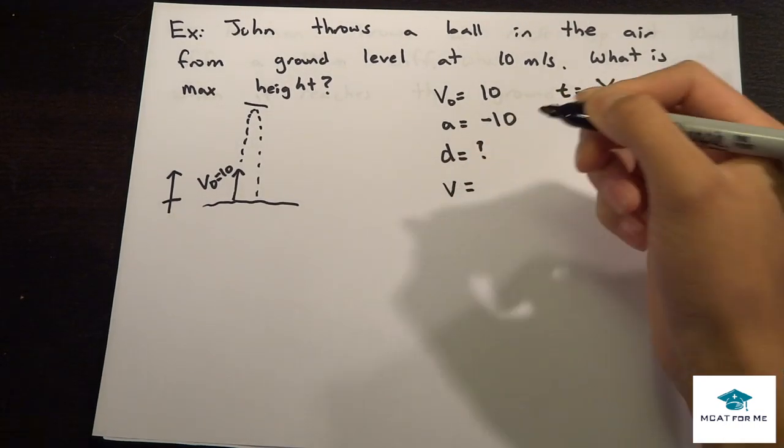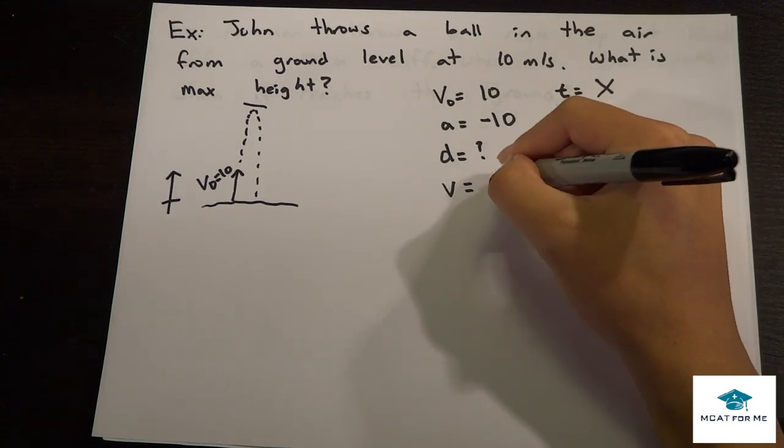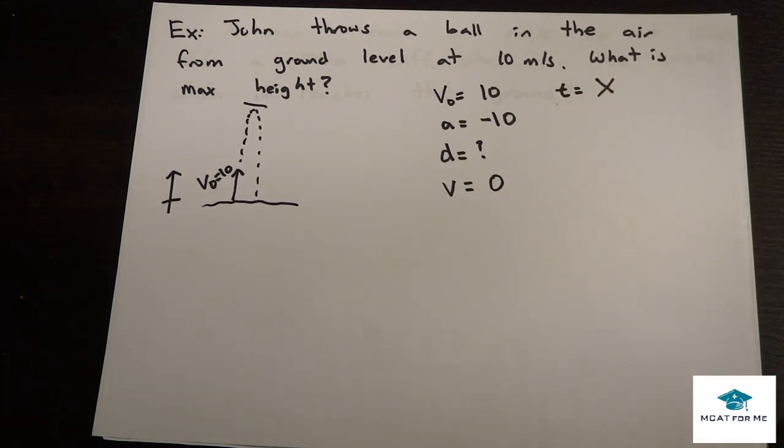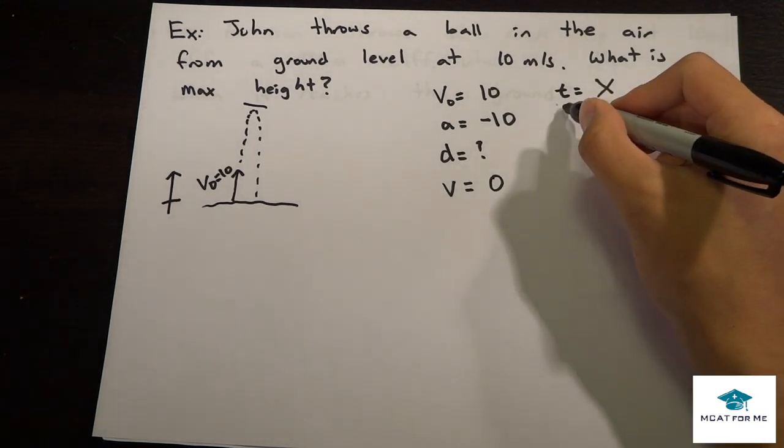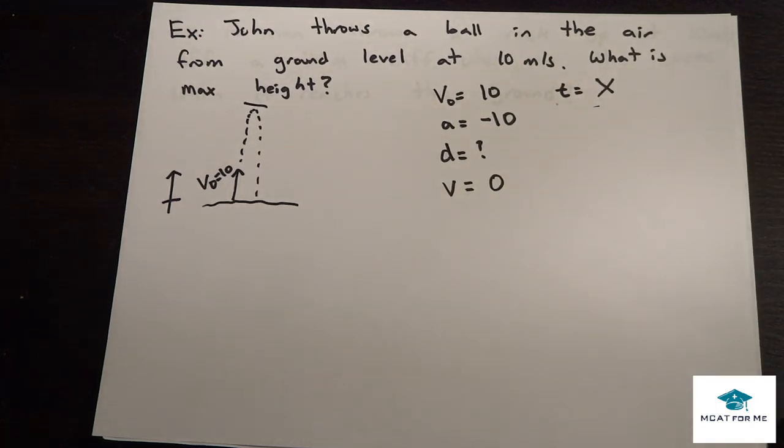Also final velocity. Do we know the final velocity? Well, it's at its max height, so we do know the final velocity. We know that it's at zero. So those are what we know, and this is the one that we don't care about. It'll help us choose our equation. And d is what we want to find out.